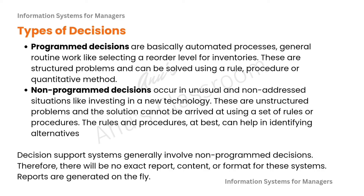We have various types of decisions as we saw in Simon's framework — programmed decisions as well as non-programmed decisions. Programmed decisions are basically automated processes and general routine work, like selecting a reorder level for inventories. These are structured problems which can be solved using a rule, procedure or a quantitative method. Non-programmed decisions occur in unusual and non-addressed situations, like whether or not we should invest in a new technology. These are unstructured problems and the solutions cannot be arrived at using a set of rules or procedures. The rules and procedures at best can help in identifying the alternatives. Decision support systems generally involve these non-programmed decisions, so there will be no exact report or content or format — reports are generated generally on the fly.